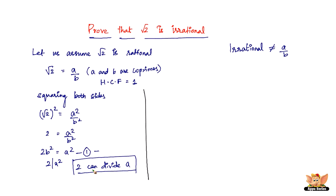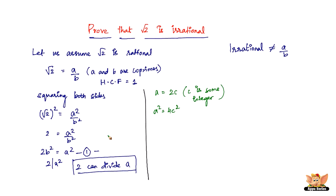So 2 can divide a — this is an important result. Now let a = 2c, where c is some integer. The reason is that if 2 divides a, there must be a factor multiplied by 2 to give a. Squaring both sides, we get a² = 4c². Now substituting the value of a² into equation 1, we get 2b² = 4c².